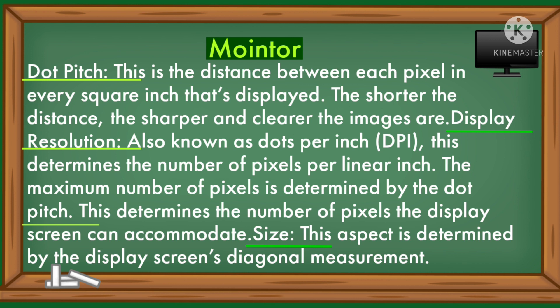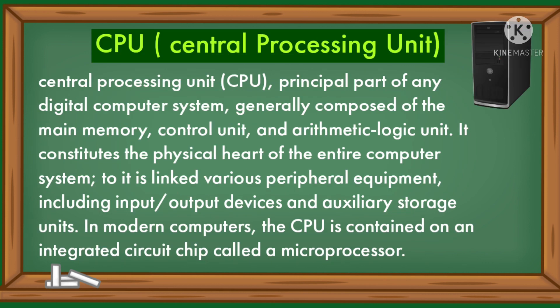Dot pitch is the distance between each pixel in every square inch that's displayed. The shorter the distance, the sharper and clearer the image. Display resolution, also known as dots per inch, determines the number of pixels per linear range. The maximum number of pixels is determined by the dot pitch, which determines the number of pixels the display screen can accommodate. Size is determined by the display screen's diagonal measurement.